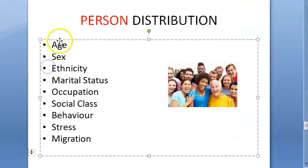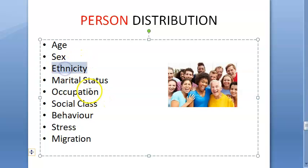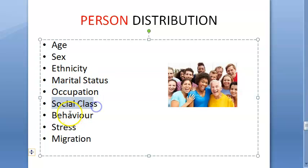In person distribution, they have divided this as age, sex or gender, ethnicity, marital status, occupation, social class, behavior, stress, and migration.